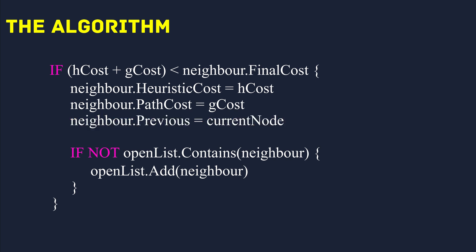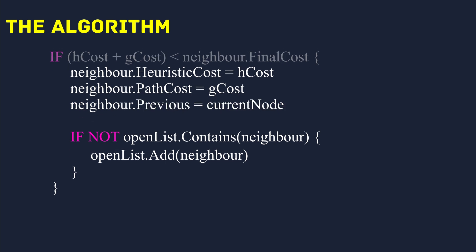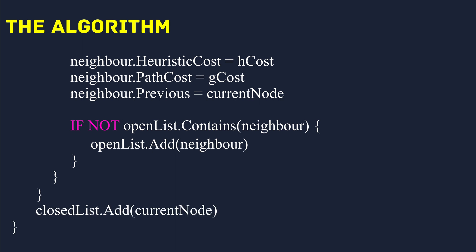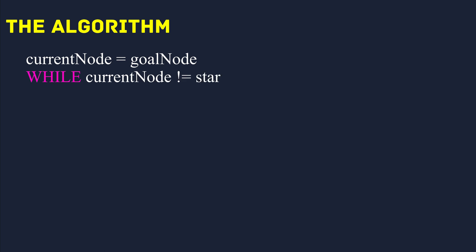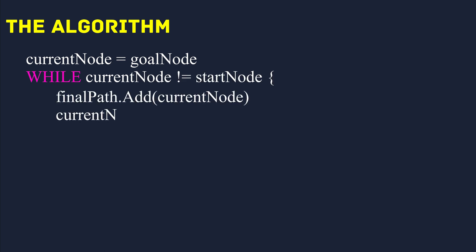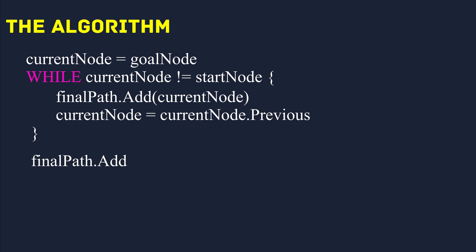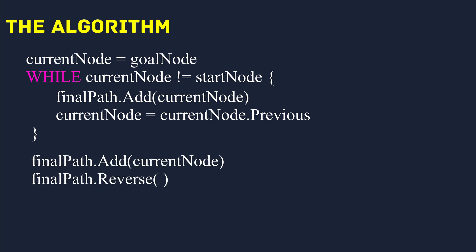When all neighbours have been considered, we can finally add the current node to the closed list, as it has been fully expanded. Once the goal has been reached, we can backtrack along all the previous pointers, recording each visited node in the final path list. By reversing this list we will have a list of nodes to visit from the start to the goal, and this will be our minimum cost path.